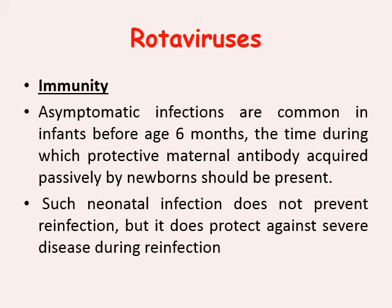Asymptomatic infections are common in infants before the age of six months, because of protection from the mother — maternal antibodies during pregnancy and during lactation. Especially breastfed children have good immunity against rotavirus infection. Breast milk plays a very important role in these cases.